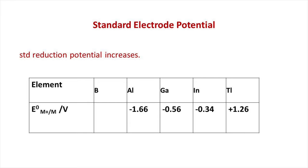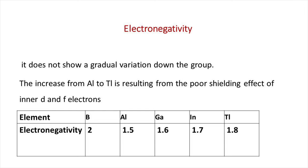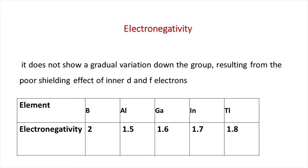The next general property is electronegativity. Electronegativity does not show a gradual variation down the group. There is a decrease from boron to aluminium, then an increase as we move further down the group. This is due to the poor shielding effect of inner d and f electrons.